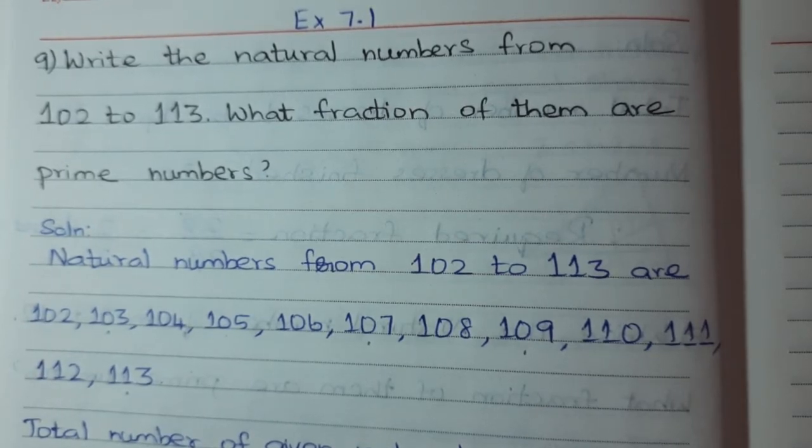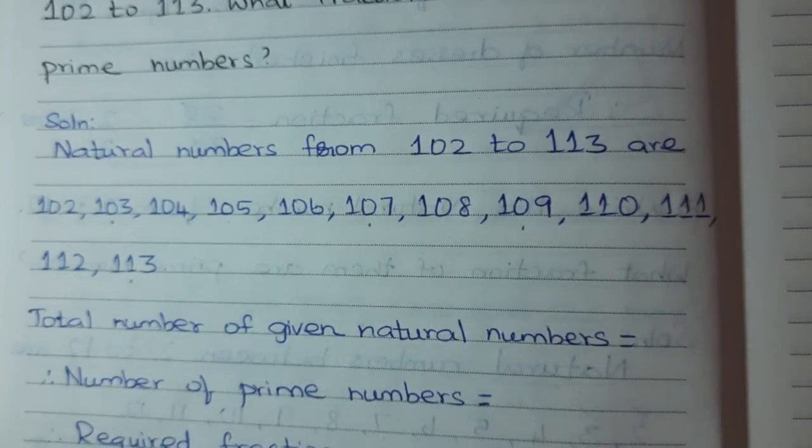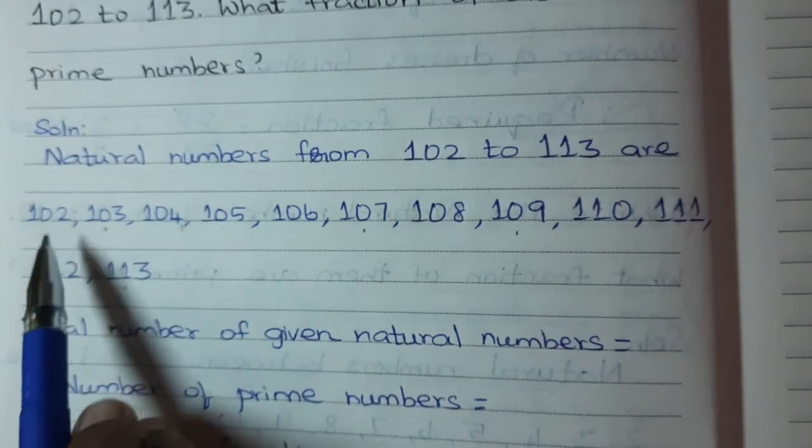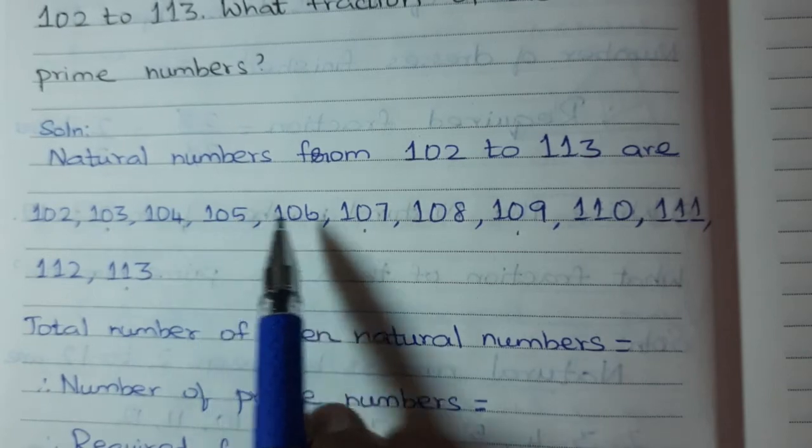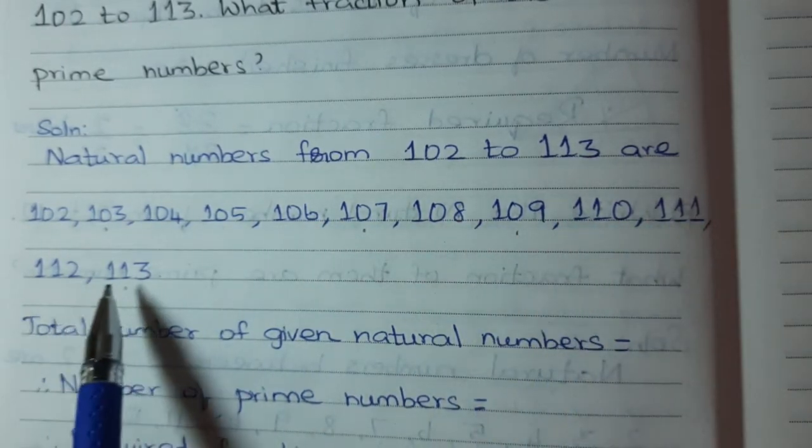Next, total number of given natural numbers. Total number of given natural numbers means you have to count this. 1, 2, 3, 4, 5, 6, 7, 8, 9, 10, 11, 12.